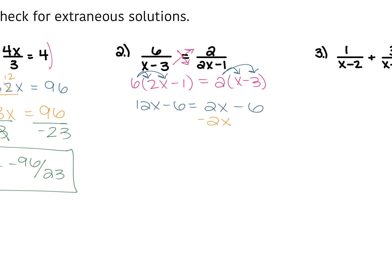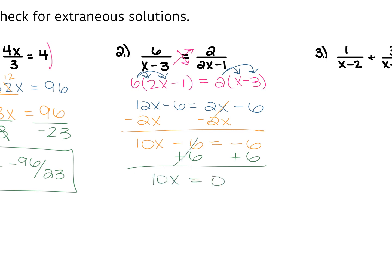If I move that 2x over by subtracting it from both sides, this is going to give us 10x minus 6 is equal to negative 6. That 6 gets added to both sides, so we have 10x is equal to 0. Whenever you have something times x is equal to 0, you still divide by that coefficient of x. So in this case, we'll divide each side by the 10, and 0 divided by anything is 0. So your x is equal to 0. Because your x is in the denominator in the very beginning, plug that in — you don't get 0 in the denominator for either fraction, so that is your answer.